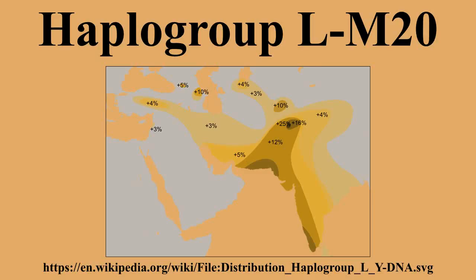Singupta 2006 discovered three sub-branches of Haplogroup L: L M76, L M317, and L M357. All three are found mostly in South Asia. In Pakistan, it has the highest frequency in Baluchistan. In India, it has higher frequency among Dravidian castes but is somewhat rarer in Indo-Aryan castes.